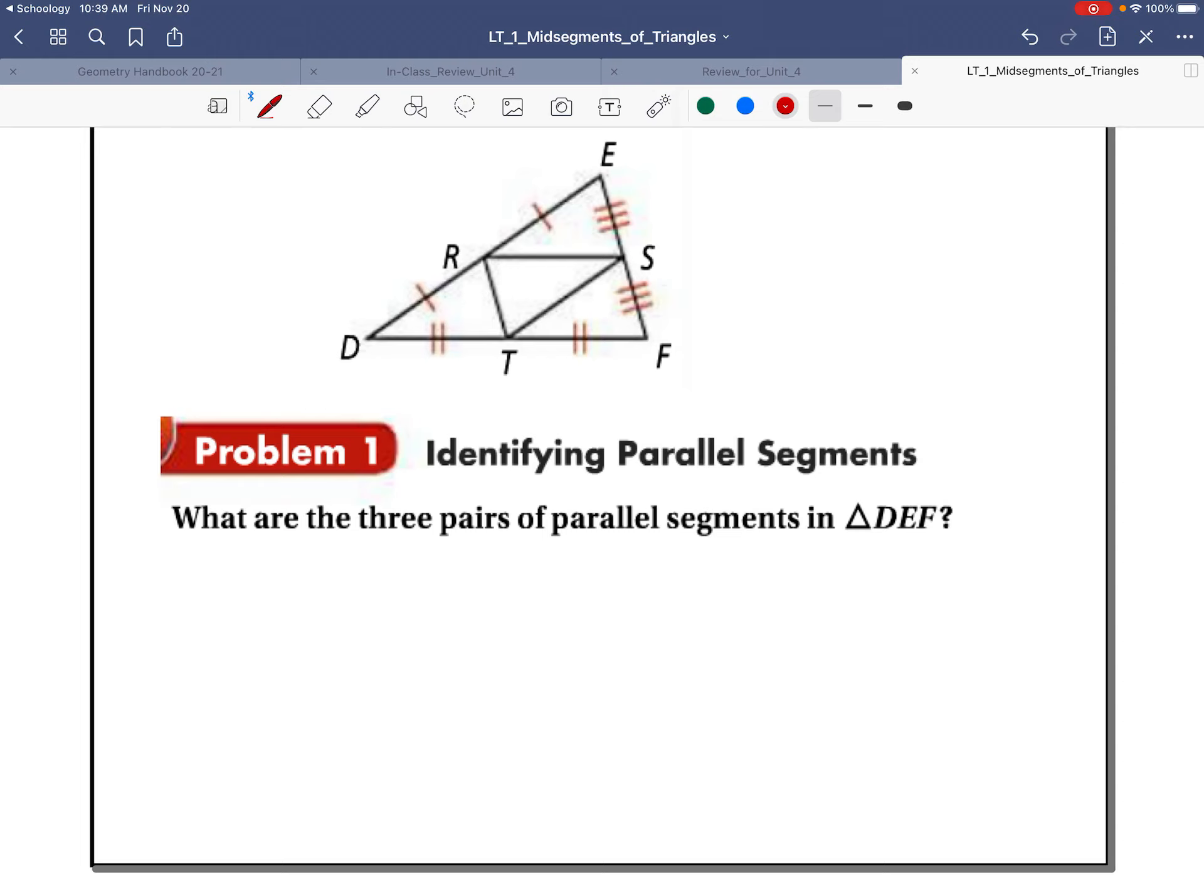Here we have a couple of mid-segments. Because R is a midpoint of DE, S is a midpoint of EF, we have RS as a mid-segment. And so we know that RS is going to be parallel to its third side, DF.